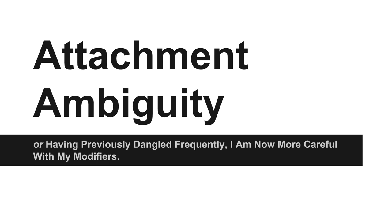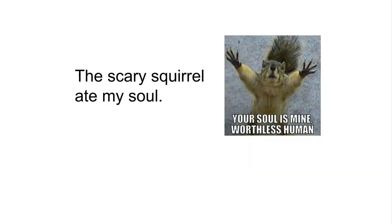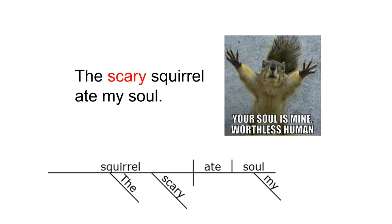Good thing for you that Grammar Day is here. Modifiers are the parts of your sentence that describe or modify other parts. For example, in this sentence, "scary" obviously modifies "squirrel" — it's telling us what the squirrel is like. You can see this modifier attachment in the sentence diagram. "Squirrel" is a very important word, and "scary" depends on that word. Thanks to Edgar for this horrifying image.